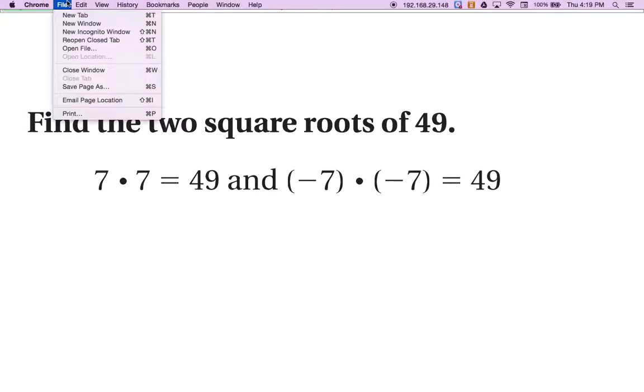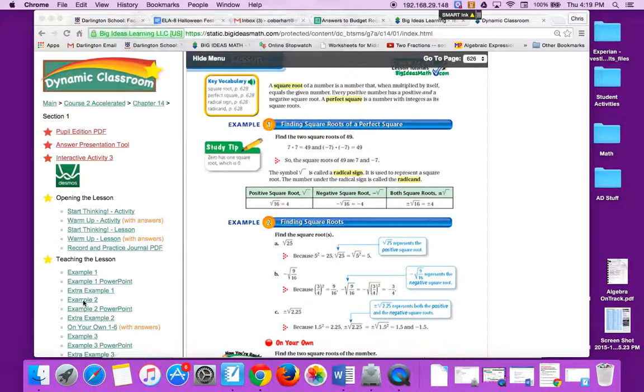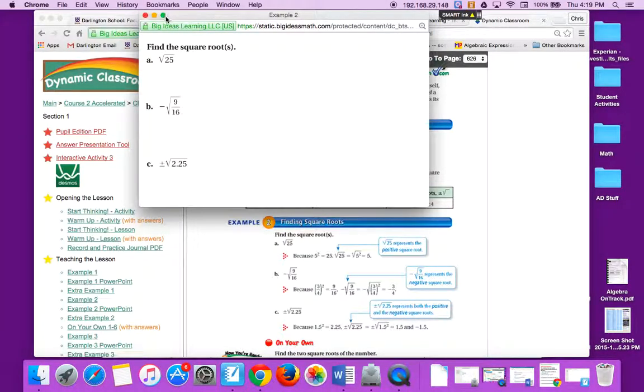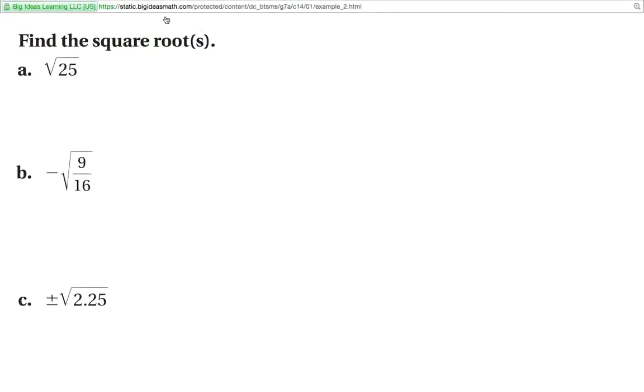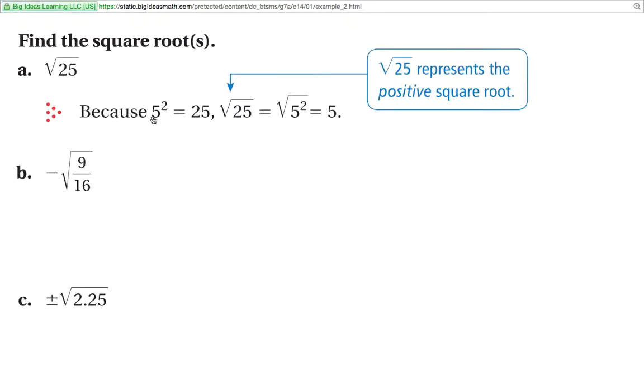All right, then we'll go over here. Next one, sample two. Now, this is what the square root looks like, this little symbol. Square root of 25, what number can you multiply by itself to give you 25? And that would be 5.